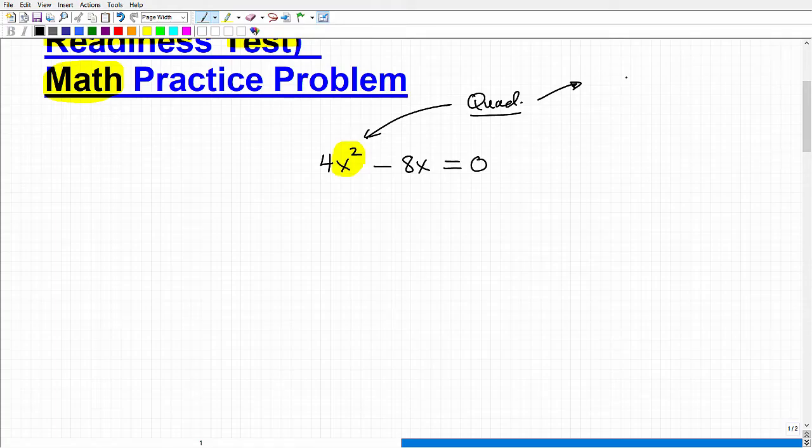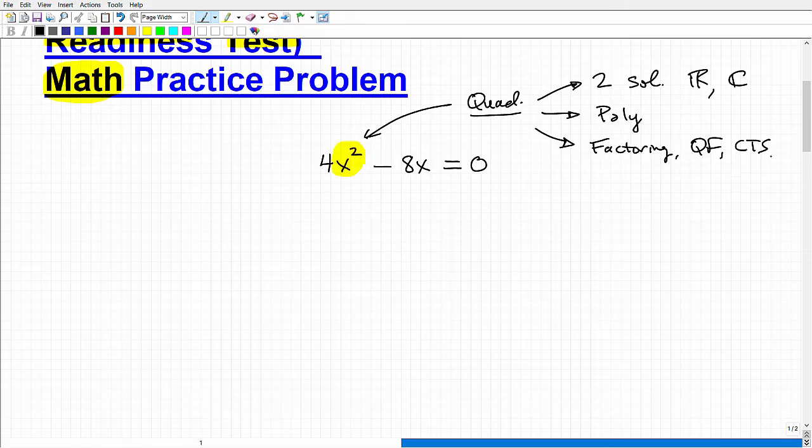First of all, all quadratic equations are going to have two solutions. There could be a combination of real numbers, complex numbers, or imaginary numbers, but they're going to have two solutions. That's the first thing. Another thing we know about quadratic equations is they are polynomials. There are various ways to solve quadratic equations to include factoring, the quadratic formula, something called completing the square, and another one here, taking the square root of both sides of the equation. So these are various techniques that you can use to solve quadratic equations.